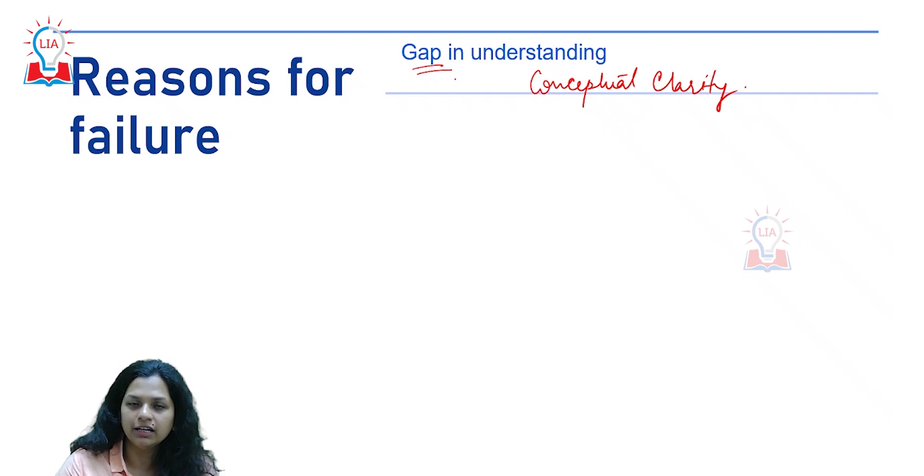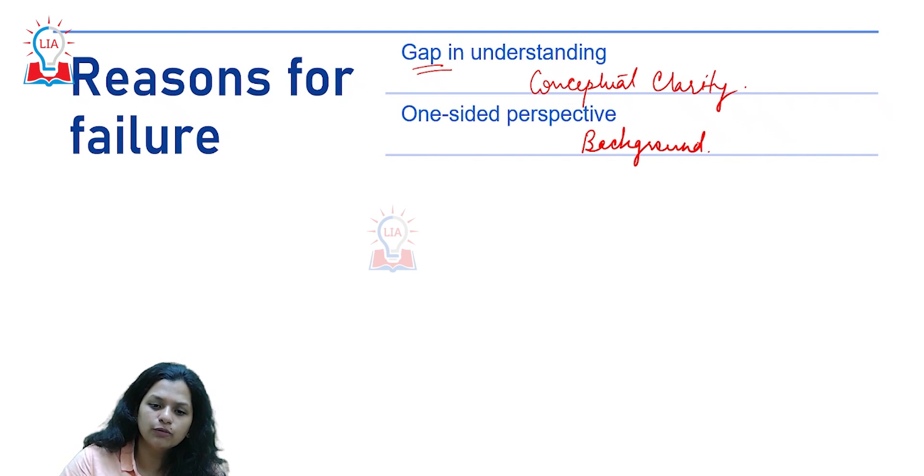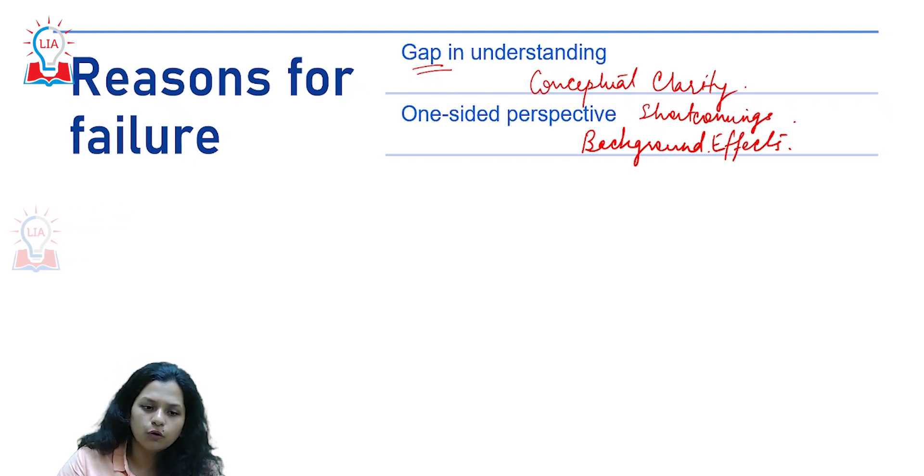Often people look at the question and start writing. Let's say if there's a question on reasons, state the reasons for this particular event. Besides reasons, you also have to give a background and the effects. If it's asking what are the benefits of this scheme, make sure you also write the challenges or shortcomings. It will always be an incomplete answer if you don't write both sides of the coin.